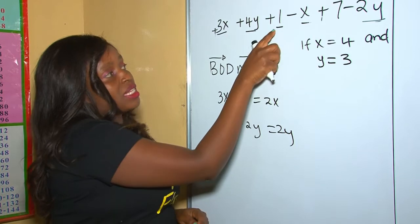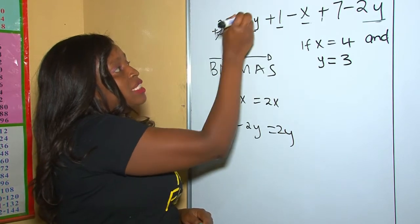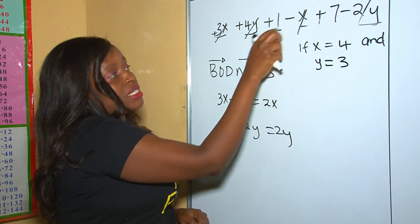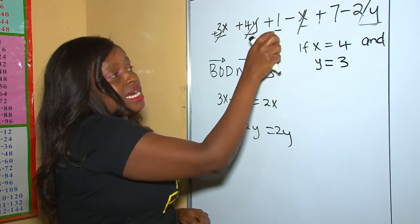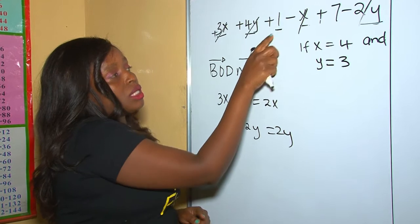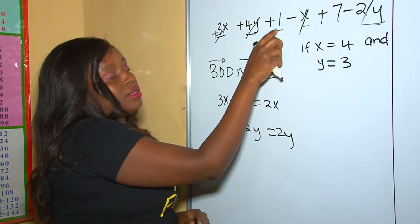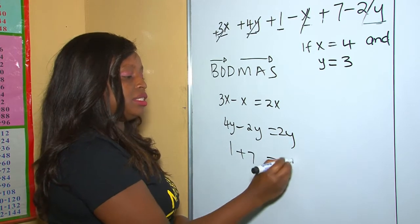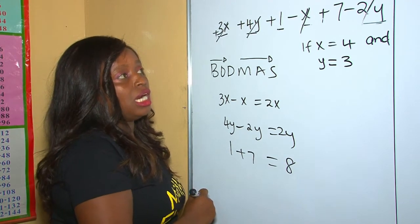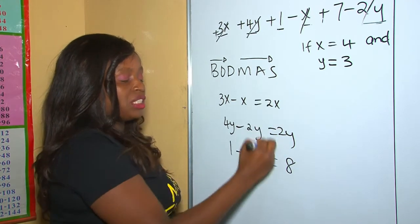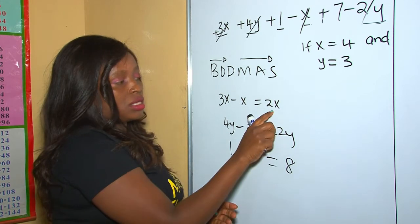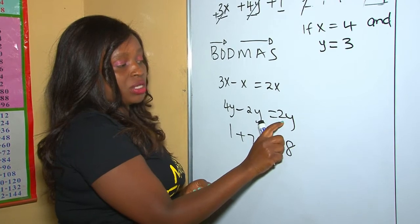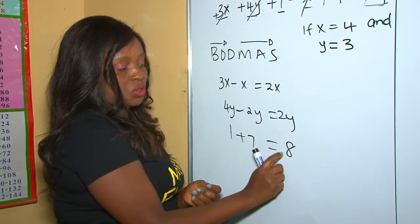We are remaining with numbers. These are the like terms, so 1 plus 7 is 8. After that, now we put everything together. For these two x terms, the sign behind each is addition, and the 2y is also addition, so we can combine them using addition.